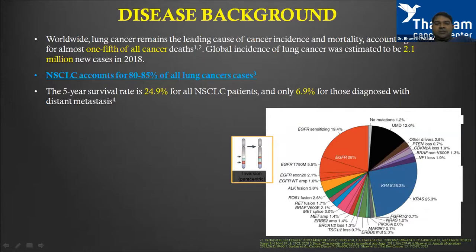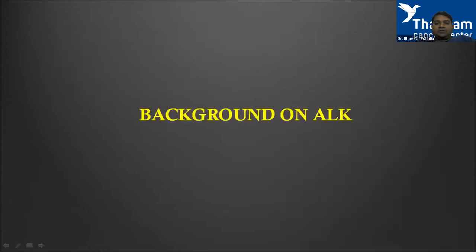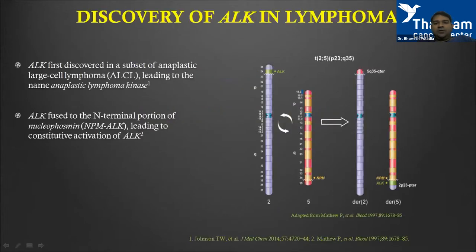The disease has improved — we have tamed lung cancer a little better with knowledge of molecular markers. The diagram shows various molecular markers we work with, and we see better outcomes when we target these markers. With that, a brief background on ALK: the discovery of ALK started in lymphoma more than two decades ago.